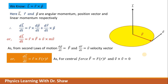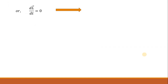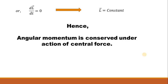Since F is a scalar quantity we can take it out, and we will have F multiplied by R vector cross R-cap. As R vector and R-cap are both in the same direction, their cross product is again zero. Therefore we can simply write dL/dt equals zero. From this equation it is very obvious that L must be a constant vector — angular momentum is conserved under the action of central force.